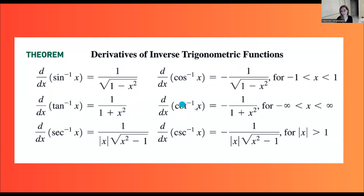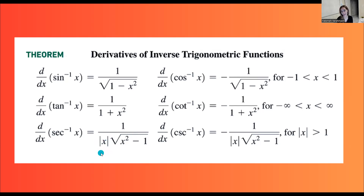The derivative of inverse cotangent is negative 1 divided by 1 plus x squared. And when you have inverse secant, the derivative is 1 divided by the absolute value of x. So if your x is positive, you can get rid of the absolute value sign. But in general, you need to have the absolute value sign times the square root of x squared minus 1.